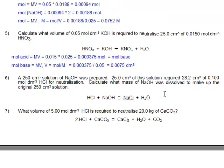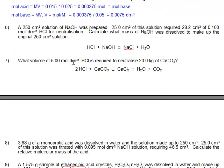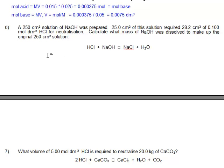Okay. Question 6. A 250 centimetre cubed solution of sodium hydroxide was prepared. 25 centimetre cubed of this solution required 28.2 centimetre cubed of 0.100 mol dm⁻³ HCl, so we can work out the actual amount of hydrochloric acid in the titration. Let's have a look at this then. Now, you can see it's a one-to-one reaction. So it's the same moles of hydrochloric acid as sodium hydroxide.